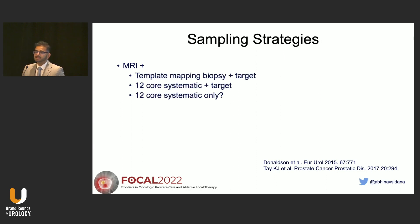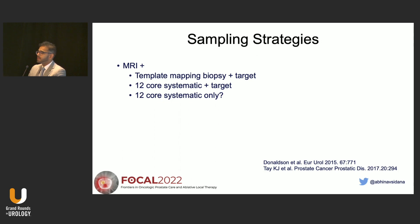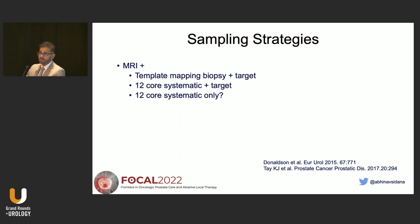You need a systematic biopsy to rule out clinically significant disease in MR-invisible areas, and that's what the consensus statements have mentioned again and again over the last 10 years. If MRI is suspicious for something and a patient could have unifocal disease where focal therapy is an option, the sampling should involve sampling the target and sampling the rest of the prostate.